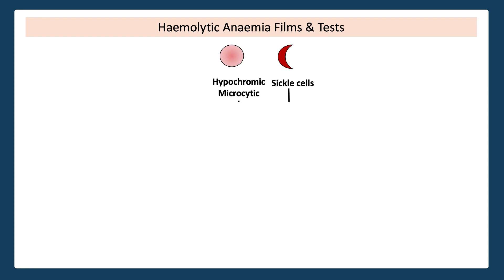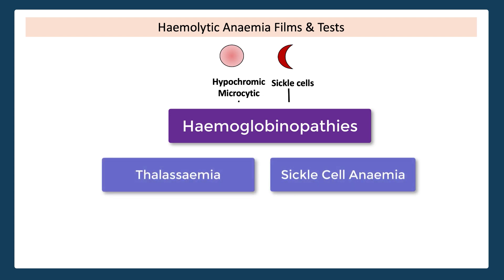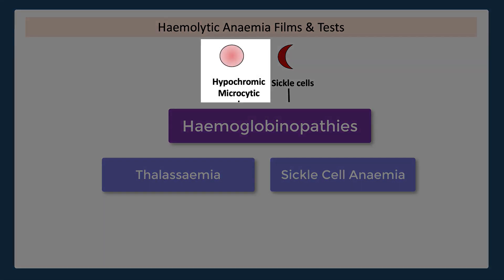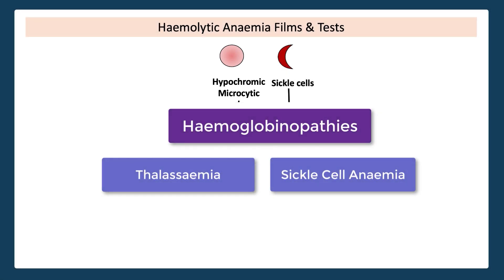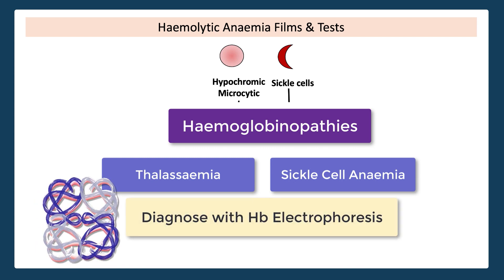The next cell type to look out for are those associated with haemoglobinopathies. Haemoglobin is composed of alpha and beta chains, and depending on what alpha and beta chains are combined, this will change the overall form and function of haemoglobin. In this category we have sickle cell anemia and thalassemias. Sickle cells are crescent-shaped cells which go along with sickle cell anemia, whilst thalassemia patients may have hypochromic microcytic red cells. The key diagnostic test for a haemoglobinopathy is HB electrophoresis, which identifies the alpha chains, the beta chains, and any other chains to diagnose these haemoglobinopathies.